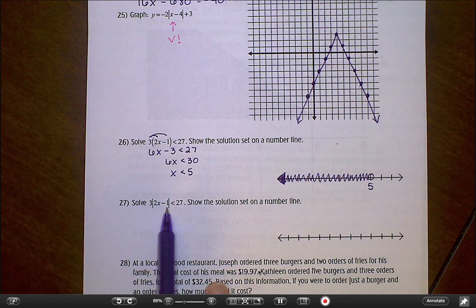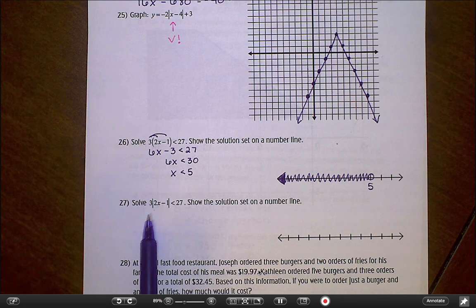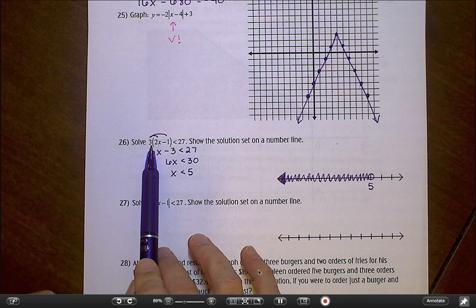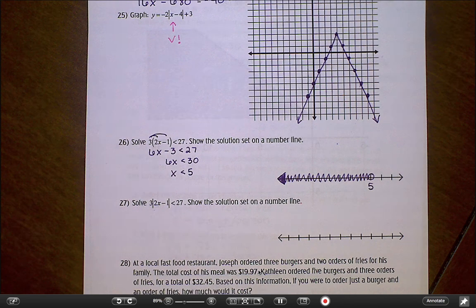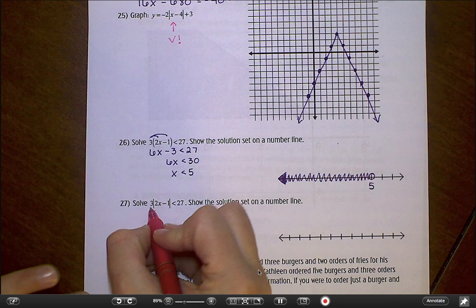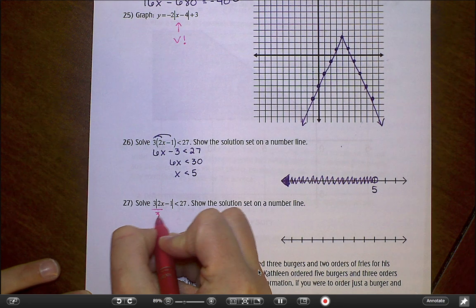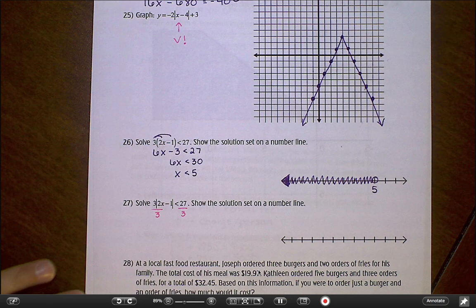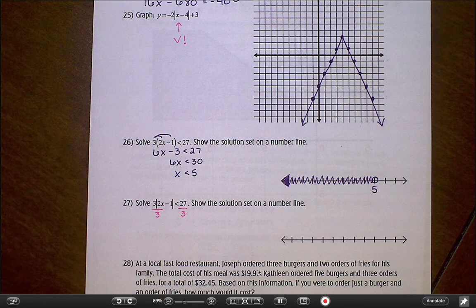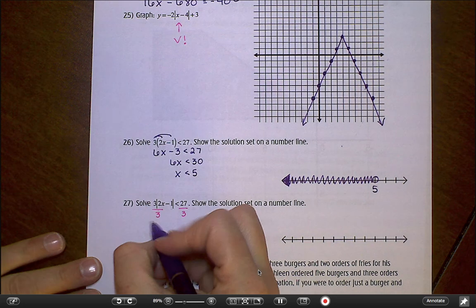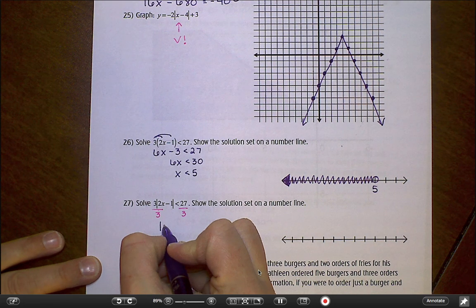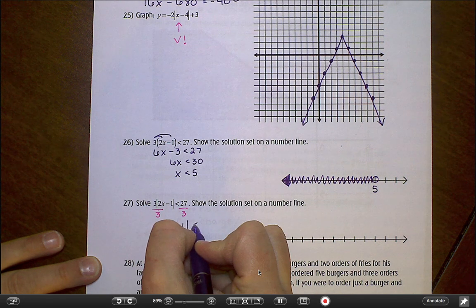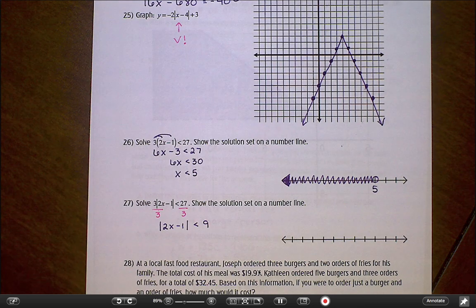So let's talk about how that's different in the next problem. With that absolute value thing there, I can't distribute the 3. I can't do the same thing I did up here. So what I have to do instead is I have to divide by that 3 to get rid of it. That's going to leave me with absolute value of 2x minus 1 is less than 9.